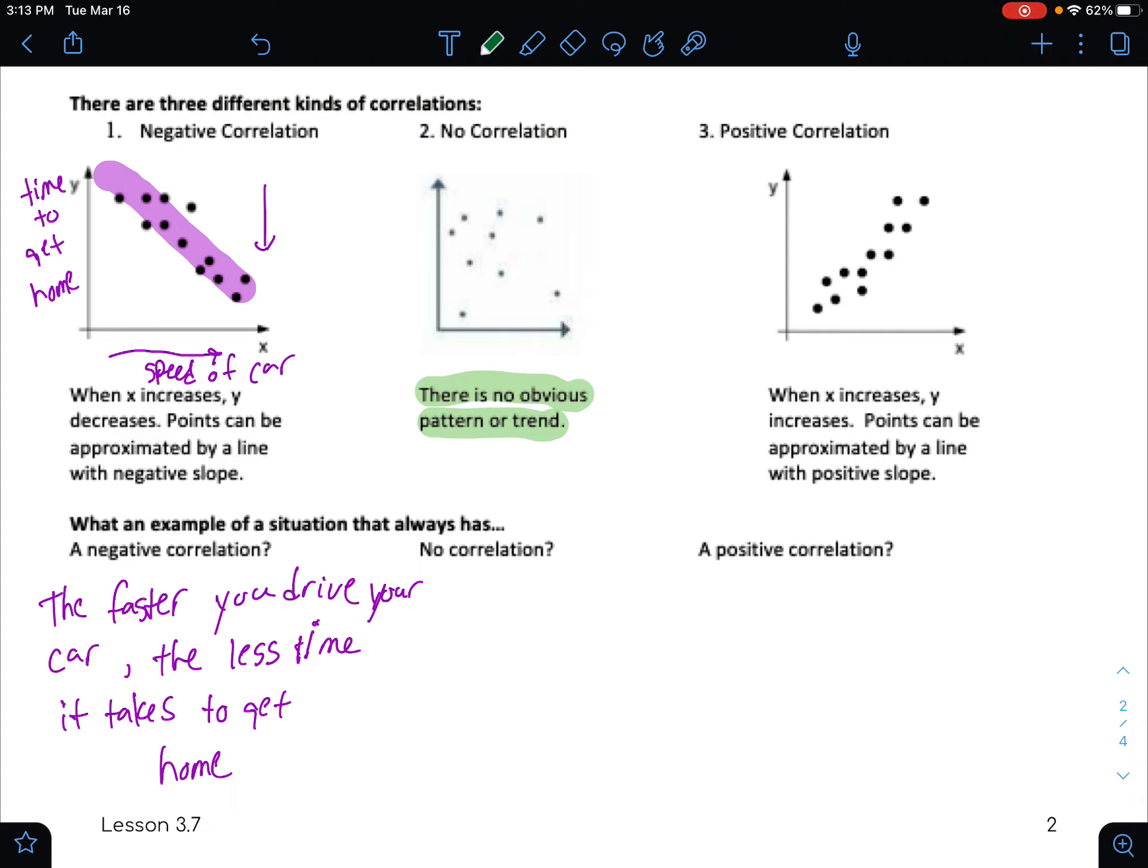Think about a situation in which there really isn't a relationship. There really isn't a connection between the two. There's many you might be able to come up with. Let's say the x-axis represents toppings on your pizza. And let's say the y-axis is hours spent doing homework.